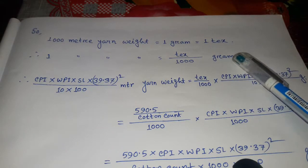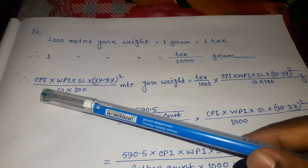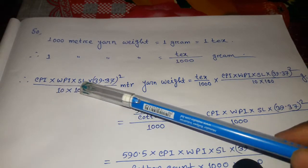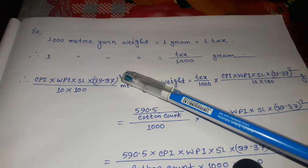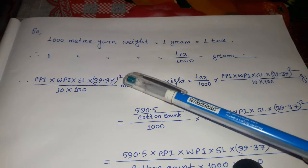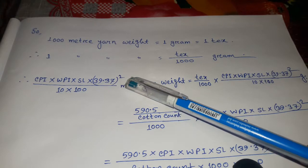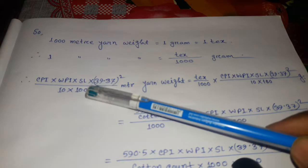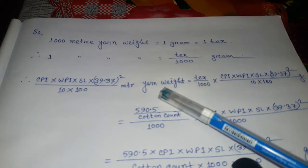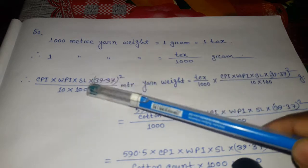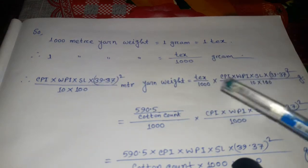From the previous report we get CPI times WPI times stitch length times 39.37 squared divided by 10 times 100. Meter yarn weight equals this value multiplied by tex, because this value increases the yarn weight.